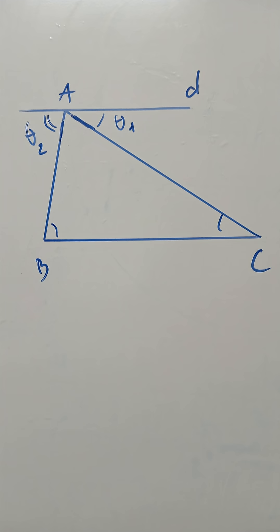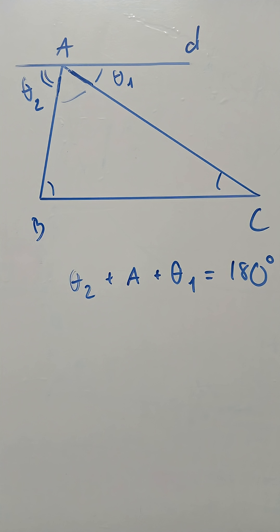As we have known, the angle of a straight line is 180, and the angle theta number 1 plus the angle of A plus the theta number 2 just made it up. Their sum would be equal to 180.